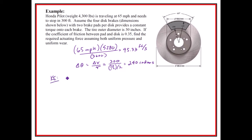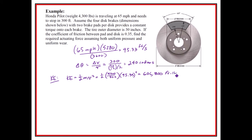The kinetic energy in the car that needs to be dissipated equals one-half mass times velocity squared. I'm ignoring rotational kinetic energy since translational is much larger. Using slugs — 4,300 pounds divided by 32.2 — times 95.33 squared gives 606,800 foot-pounds.